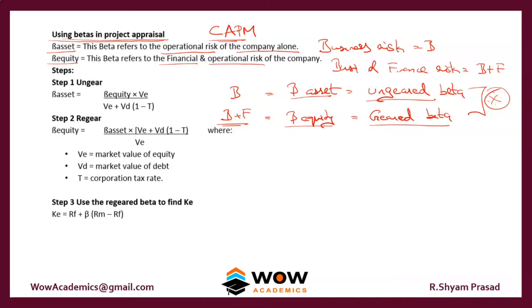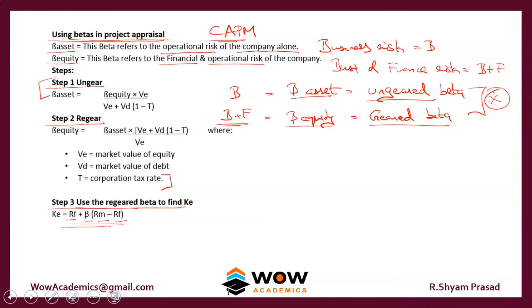The first step is called ungearing, the second step is called regearing, and the third step is finding out the Ke. This formula you would have already seen in cost of capital: Ke equals Rf plus beta into Rm minus Rf. The new steps in the problem are ungearing and regearing. We will look at a problem and see how this is going to be used.